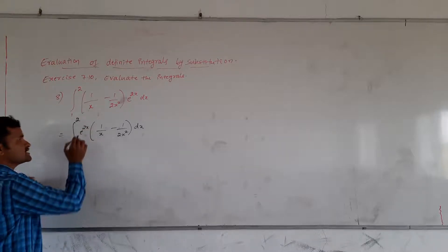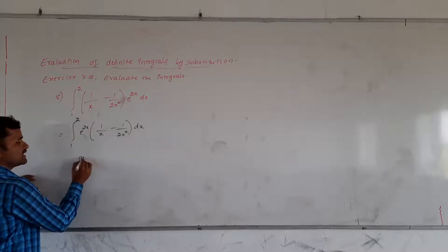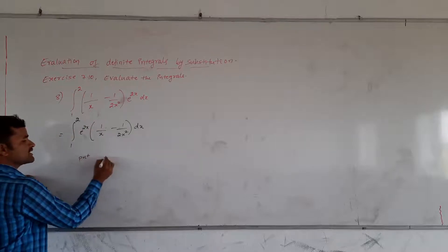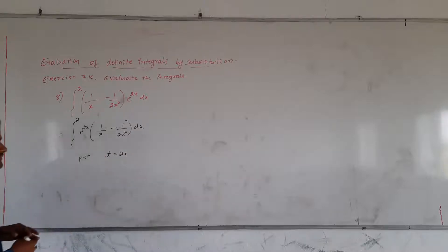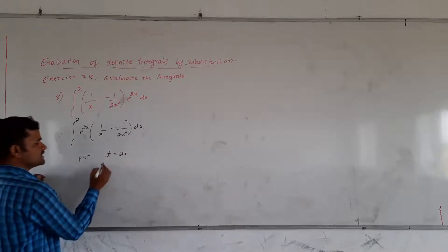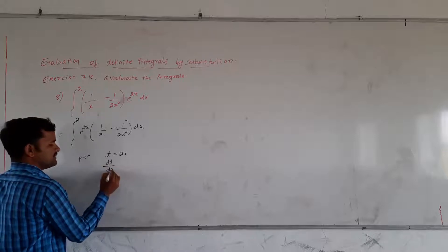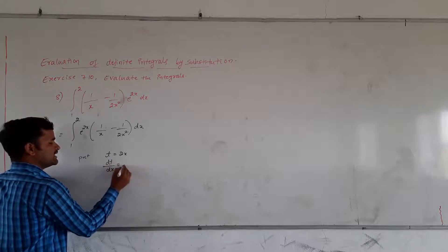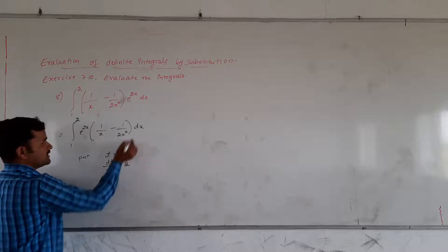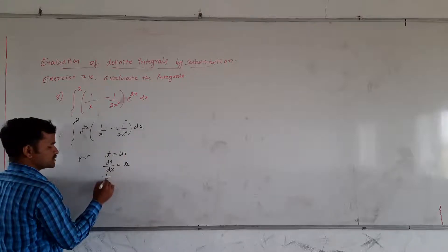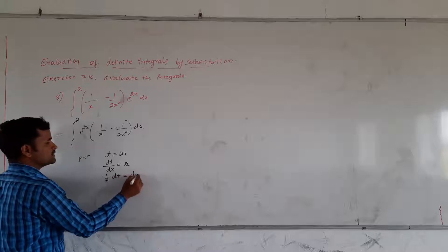So, let me substitute: t is equal to 2x. Then, differentiating the function with respect to x, we have dt/dx is equal to 2. Here, only dx is there. Take this 2 to the left hand side: 1/2 · dt is equal to dx.